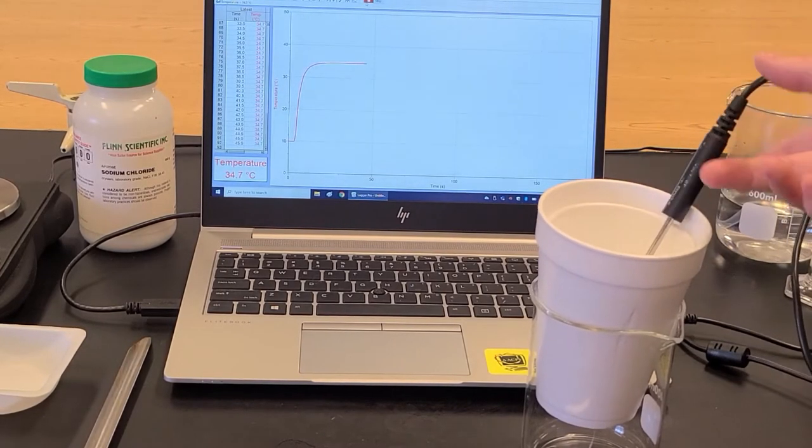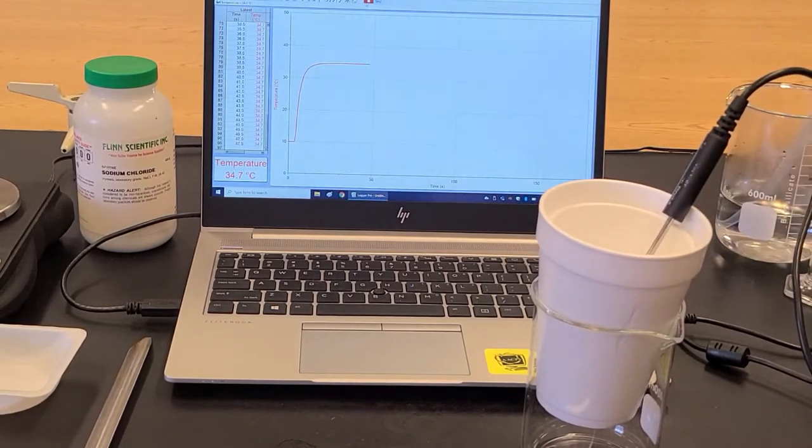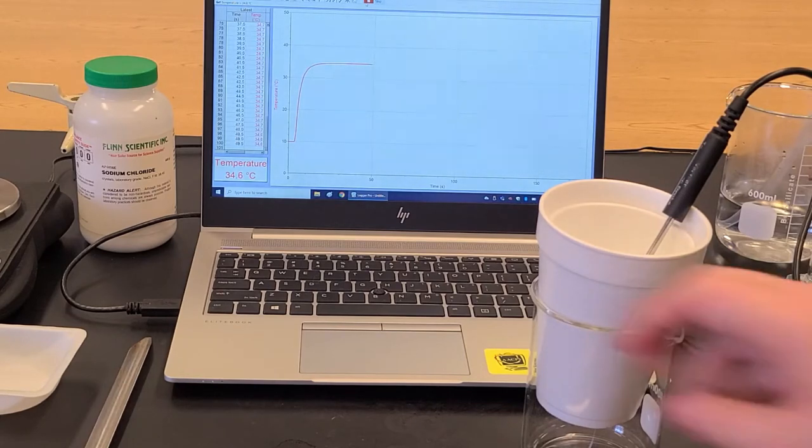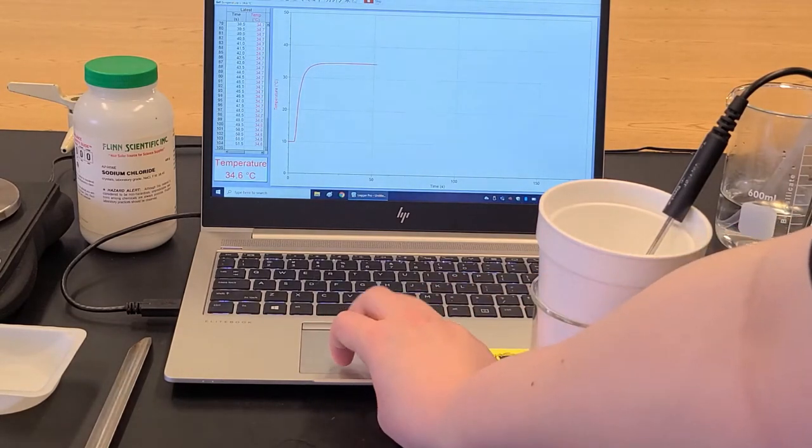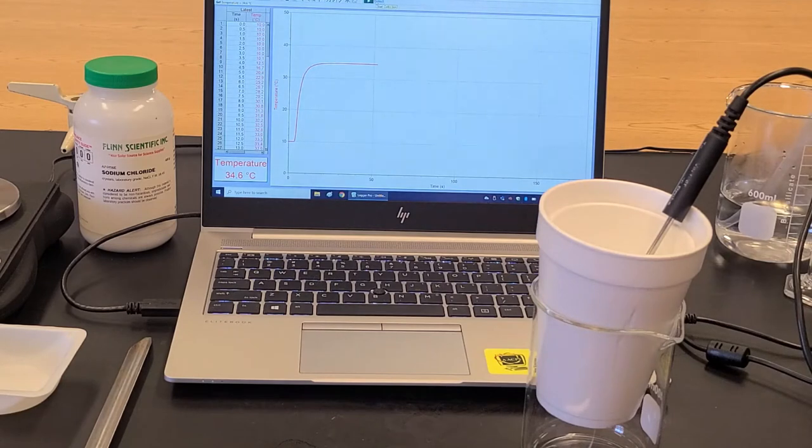So I'm going to use this data to determine the difference in heat exchange between the hot and cold water. And that difference is going to be due to heat absorbed by the calorimeter. So that will help us to determine our calorimeter constant.